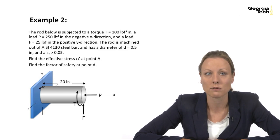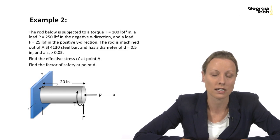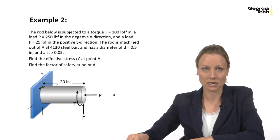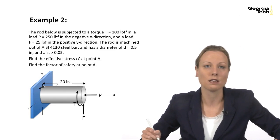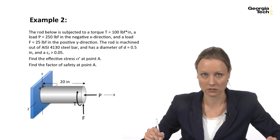The rod has been machined out of 4130 steel bar. It has a diameter D equals 0.5 inches. And the strain at fracture is greater than 0.05 inches per inch. They want you to find the effective stress at point A, which is right here, and they want you to also find the factor of safety.